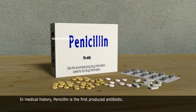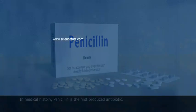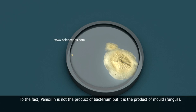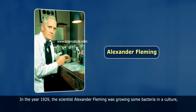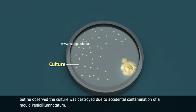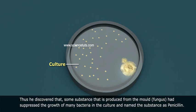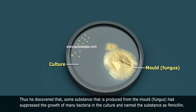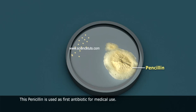In medical history, penicillin is the first produced antibiotic. In fact, penicillin is not the product of a bacterium, but it is the product of a mould — a fungus. In the year 1929, the scientist Alexander Fleming was growing some bacteria in a culture, but he observed the culture was destroyed due to accidental contamination of a mould, Penicillium notatum. Thus, he discovered that some substance produced from the mould had suppressed the growth of many bacteria in the culture, and named the substance penicillin. This penicillin is used as the first antibiotic for medical use.